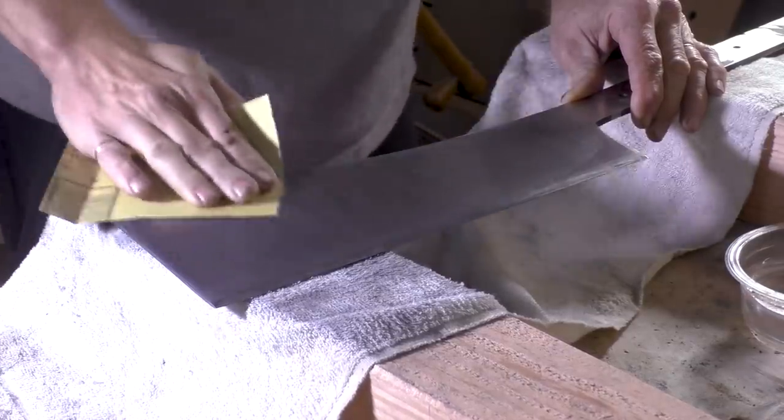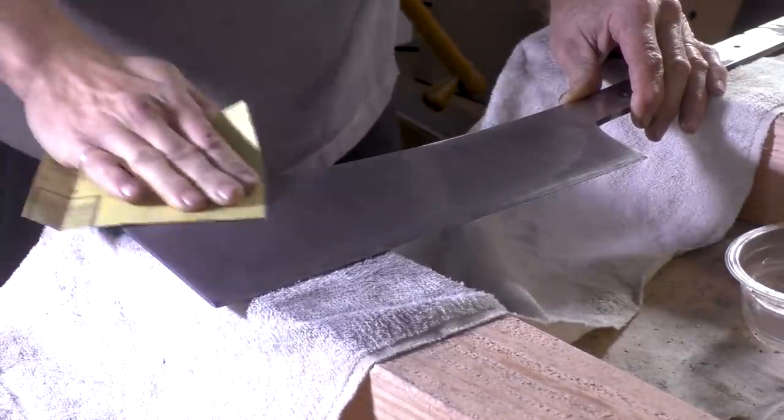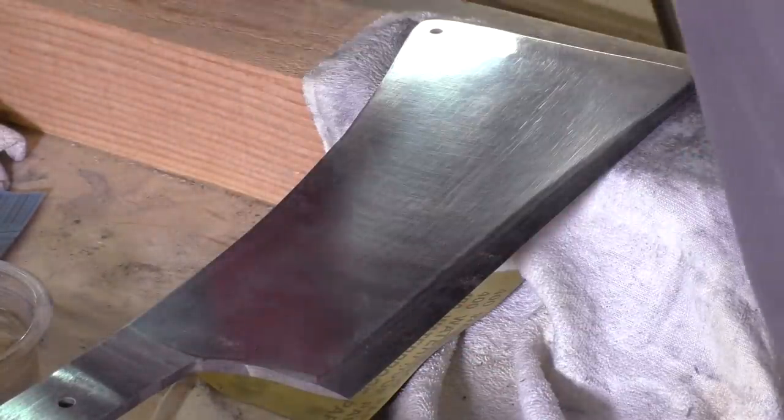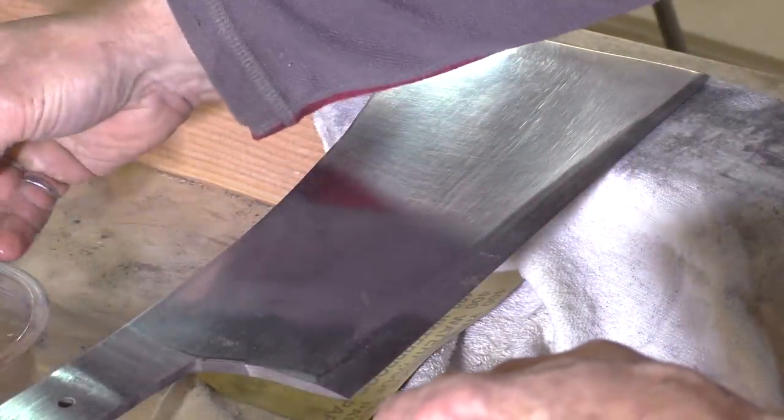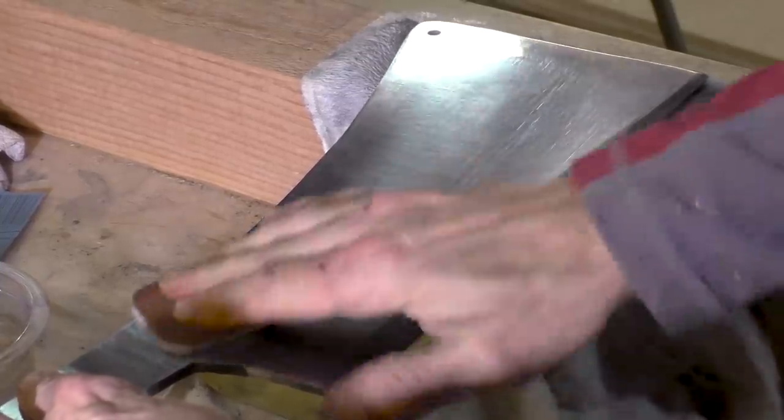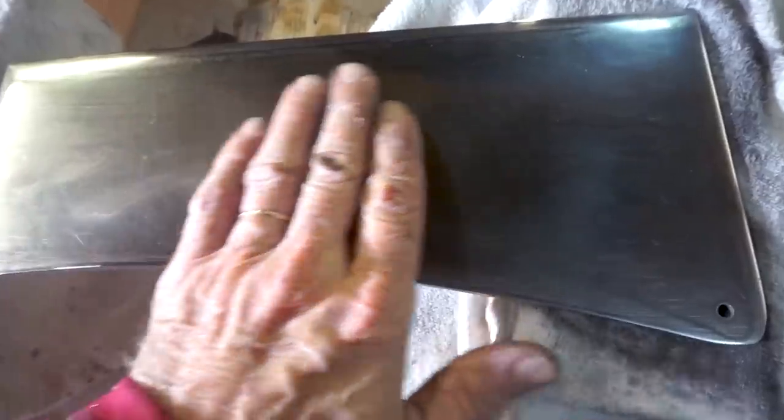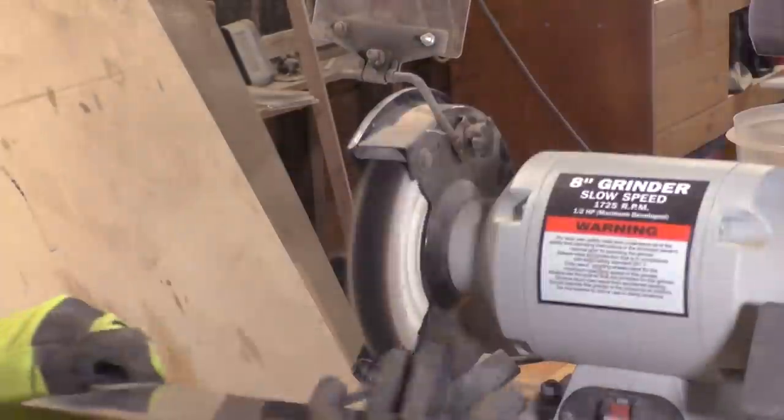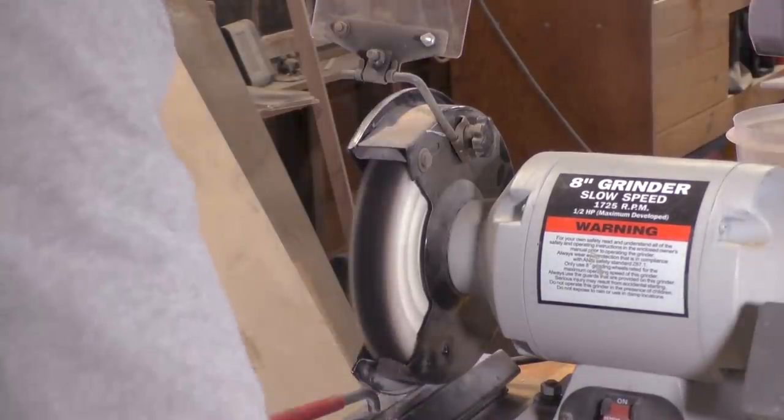After using the 800 grit sandpaper, which is the finest sandpaper I have, I moved over to these micro mesh pads. They are 2 inch pads that range in abrasiveness from 1500 grit all the way up to 12,000 grit. This is after using the 3600 grit pad and now I can begin to see my reflection in the steel. After working my way through all the grits, I moved over to the buffing wheel and I'm using a green buffing compound as well.